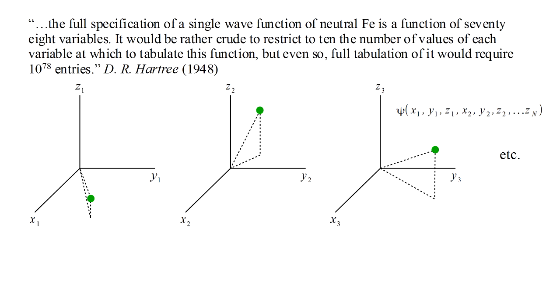The challenge this presents was summed up by Douglas Hartree as follows. The full specification of a single wave function of neutral iron, which has 26 electrons, is a function of 78 variables. It would be rather crude to restrict to 10 the number of values of each variable at which to tabulate this function, but even so, full tabulation of it would require 10 to the 78th power entries. How big a number is 10 to the 78th power? About a billion times the number of atoms in the Milky Way galaxy.